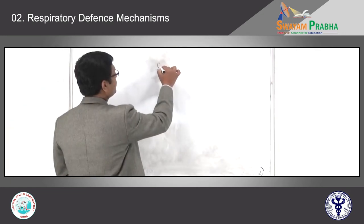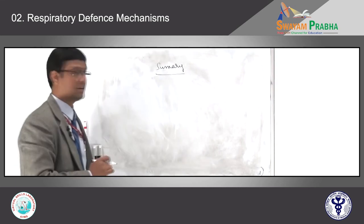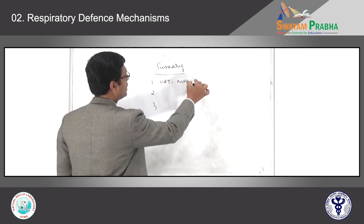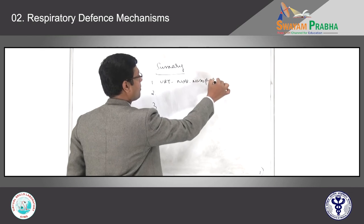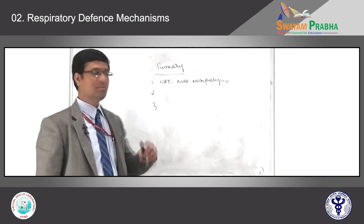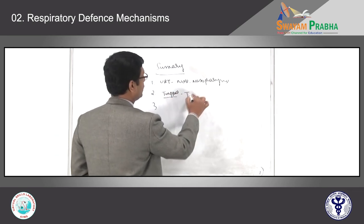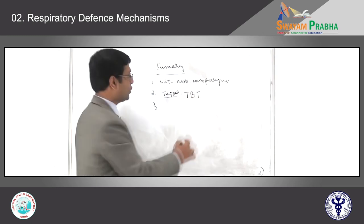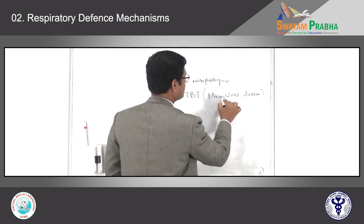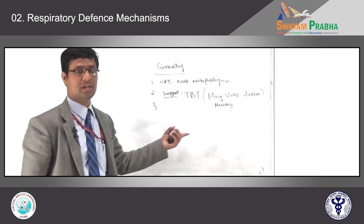In summary, in all healthy individuals the respiratory system has three important defense mechanisms. First, the upper respiratory tract — including the nose and nasopharynx — filters and prevents the majority of large dust particles. Second, medium-sized particles that escape the nose are trapped in the tracheobronchial tree due to mucociliary clearance and the presence of mucus, and are finally expelled from the respiratory system.